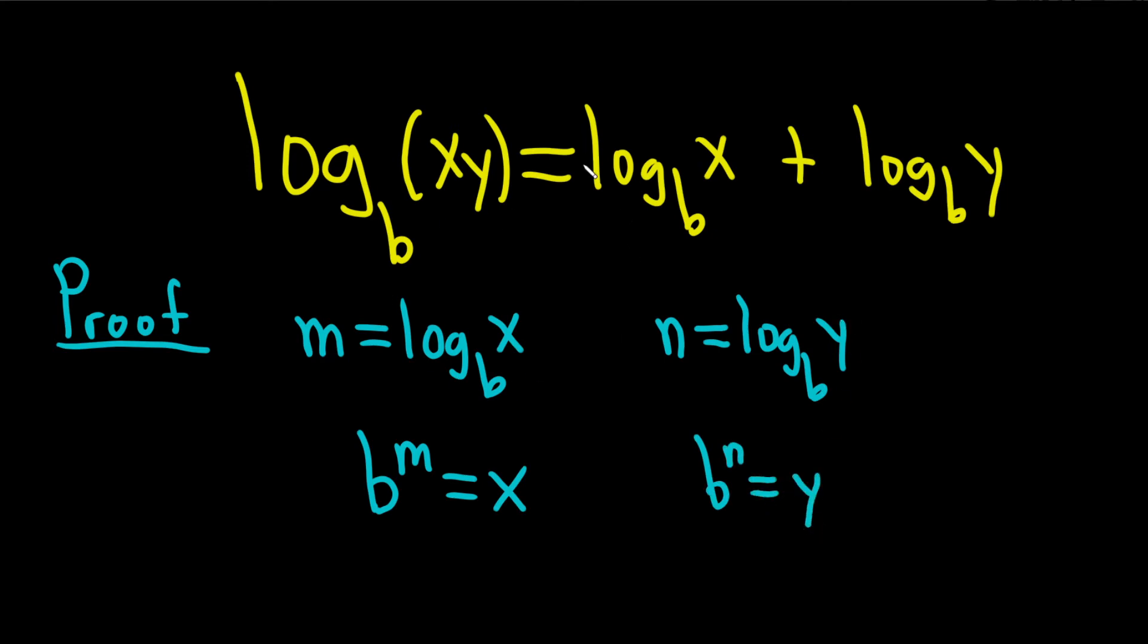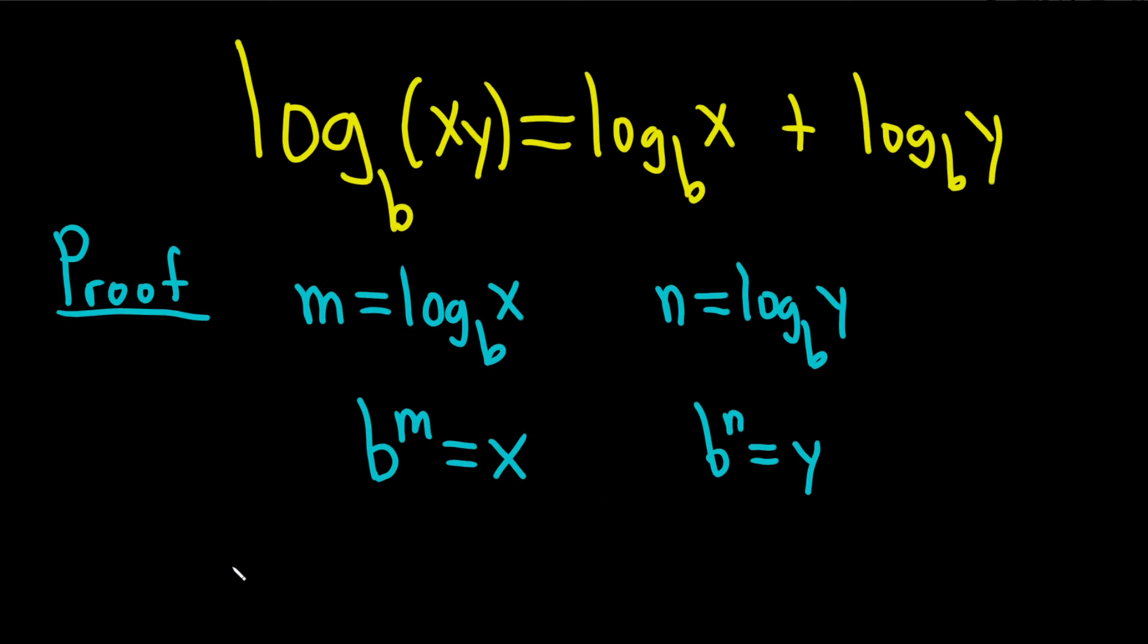Okay, so we're trying to show something about the log base b of x times y. The natural thing to do now is to multiply the x and the y, so let's do that. If we look at xy, that's going to be b to the m times b to the n. Then you can use properties of exponents because the bases are the same, you add the exponents, so it's b to the m plus n.